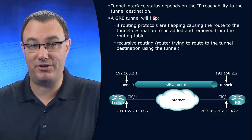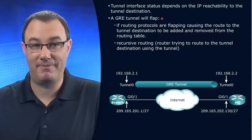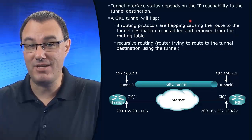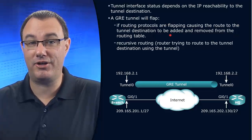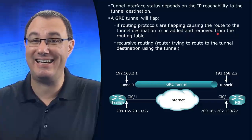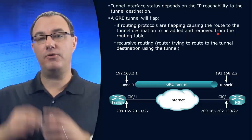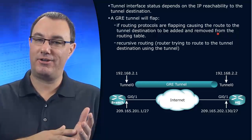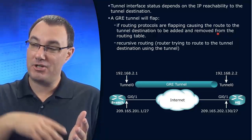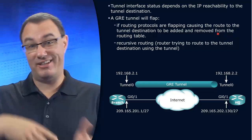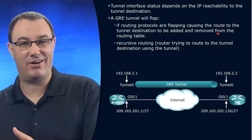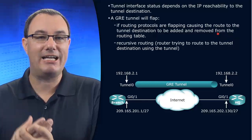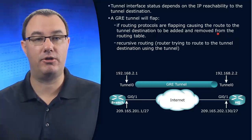Why might a GRE tunnel flap? Your routing protocols are flapping, causing the route to the tunnel destination to be added and removed. Because if you can't reach the tunnel destination, then the GRE tunnel goes down. Maybe your dynamic routing protocol reinstalls it, and then you can get there, and vice versa. So you have that added dependency of being able to reach the tunnel destination.